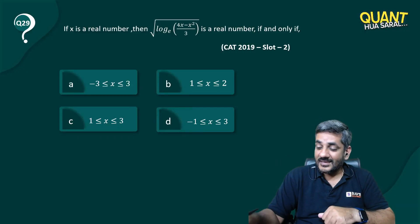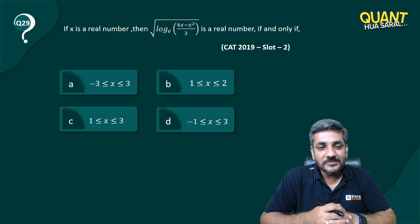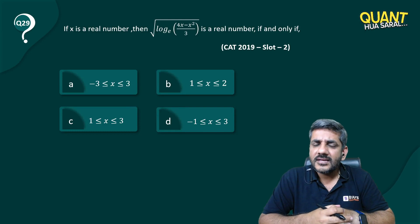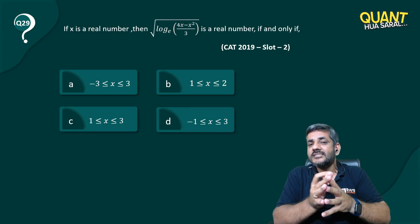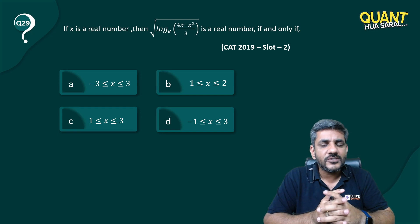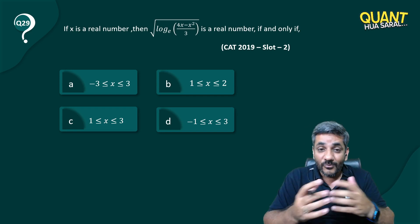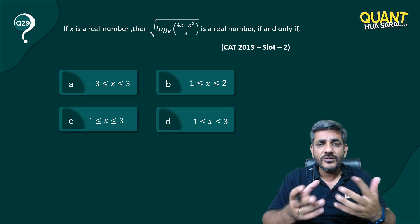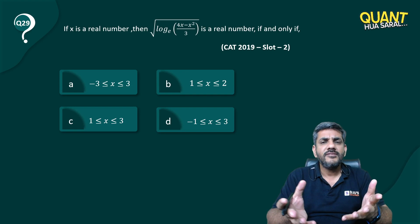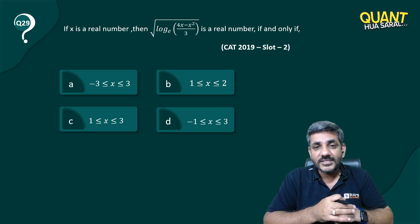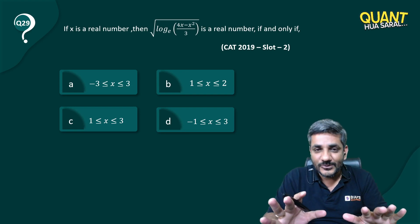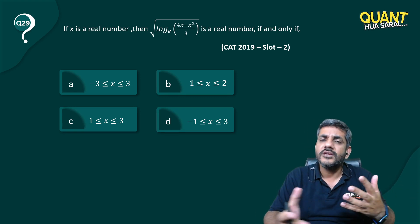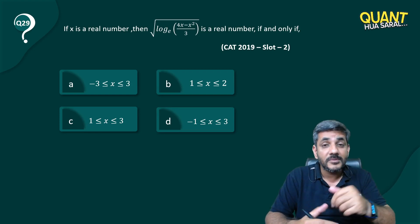Hello, welcome back. Here is question number 29. X is a real number — this expression is a real number if and only if. Now, this expression has a base of e, and many of us don't even know what e is. We don't use it much in CAT equations, but if CAT is asking a question on it, they are not going to use it deeply. It is just like another constant — like 2, 3, 4, 5. They have written e just to scare you. Don't be scared of it.